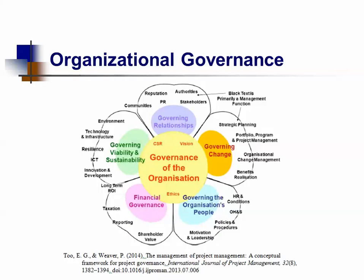The fourth petal is financial governance — where funding comes from, shareholder value, taxation and reporting, and long-term return on investment projected and realized. The fifth and final petal is governing viability and sustainability. The organization must be governed to ensure resilience and continuity of business, non-stagnation, meaning innovation and development must be promoted, resilience to competitors, technology and infrastructure development to leverage technology in its processes, and governing environmental factors to strengthen the company.